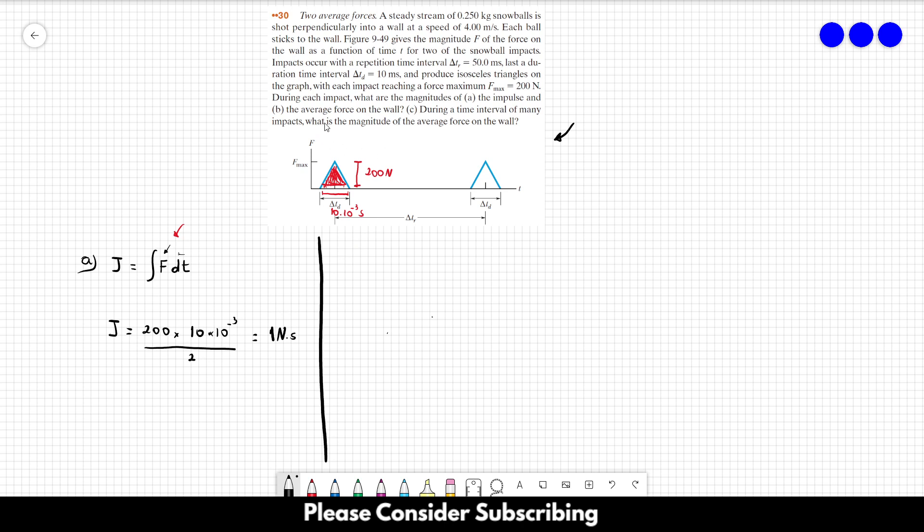Letter B, the average force on the wall. So if the force is constant, then we can calculate an average force. Let's suppose that the force is constant. Of course it's not. But the average force considers the impact as having a constant force. So the impulse is equal to the average force times delta t.